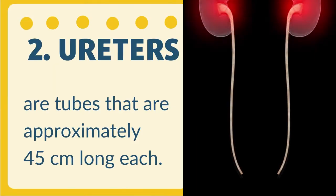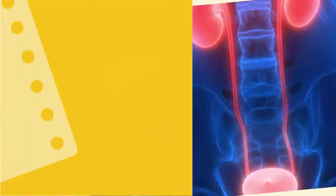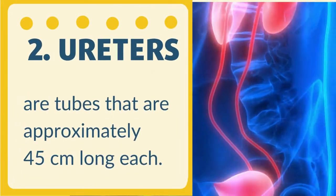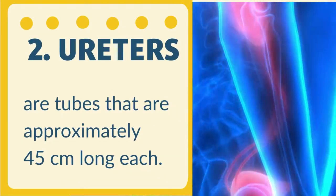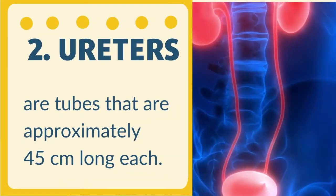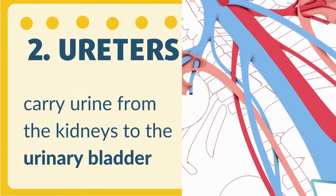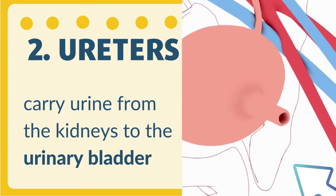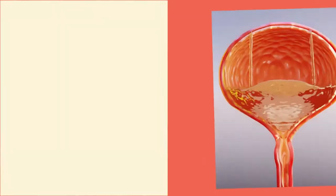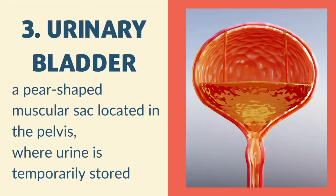Second is the ureter. Ureters are tubes that are approximately 45 cm long each. They carry urine from the kidneys to the urinary bladder, as seen in this illustration.